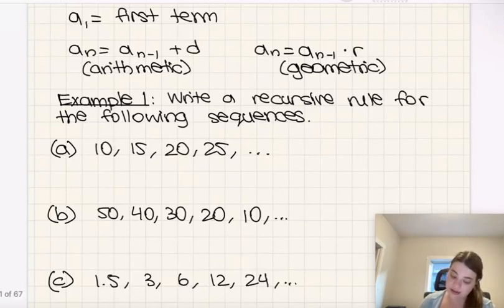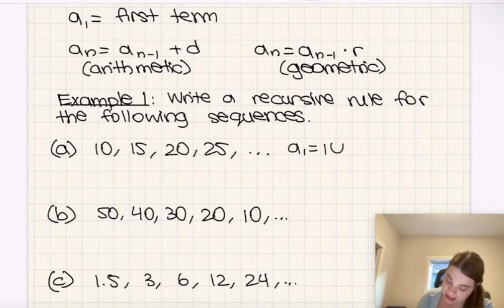So for this first one, the first term, a1, is equal to 10. We can see that's the first term here. And then I need to determine whether this is an arithmetic or geometric sequence. So do I add the same number each time to get to the next term, or do I multiply the same number each time to get to the next term? And the answer is I add the same number each time.